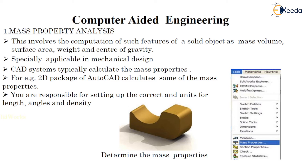Computer-aided engineering. The first part is mass property analysis. Any CAD computation offers features of a solid object such as mass, volume, surface area, weight, and center of gravity, which play important roles especially in mechanical design. CAD systems typically calculate the mass properties. For example, for a 2D package, AutoCAD calculates some of the mass properties. You are responsible for setting up the correct units of length, angles, and density to determine the mass properties, as shown in the AutoCAD toolbar where we can easily access mass properties.